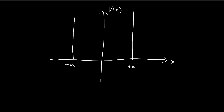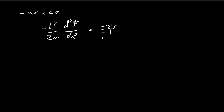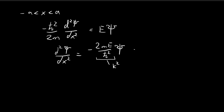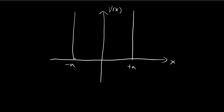We're going to solve the Schrödinger equation for this setup. Within the region negative a to positive a, the potential is just 0, so the time-independent Schrödinger equation gives us d²ψ/dx² equal to negative (2mE/ℏ²)ψ. Letting k² equal 2mE/ℏ², we can rewrite this as negative k²ψ. The general solution is ψ(x) = A·sin(kx) + B·cos(kx) for the region negative a to positive a.